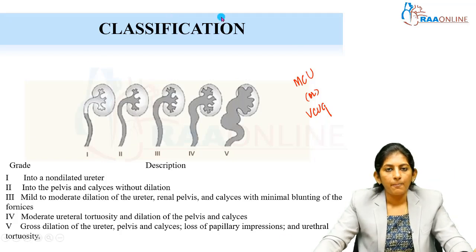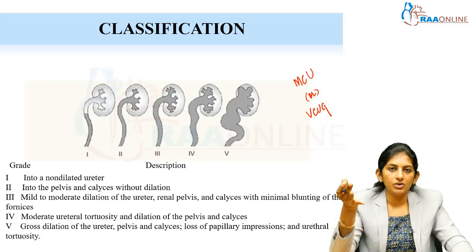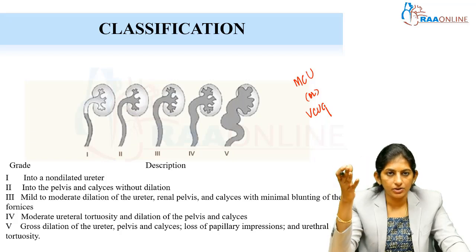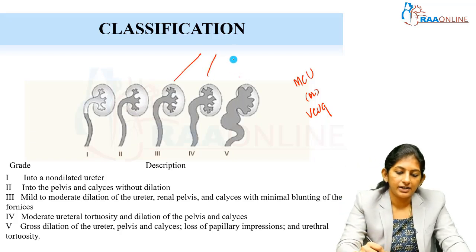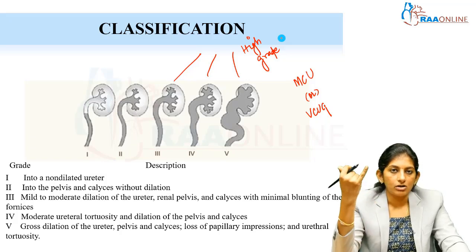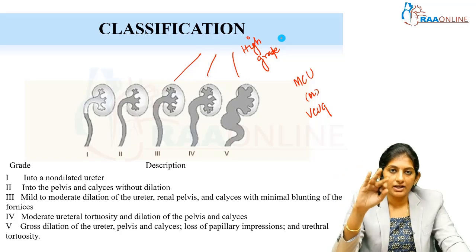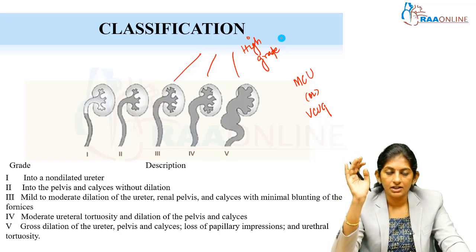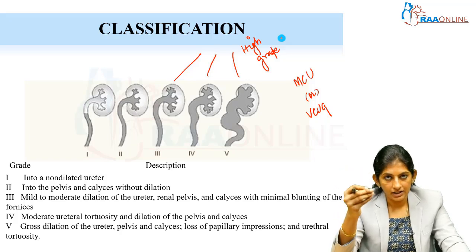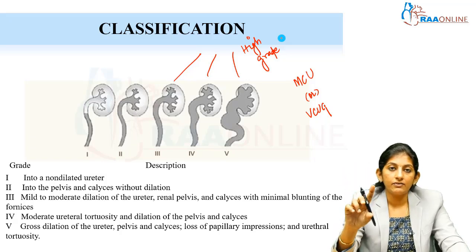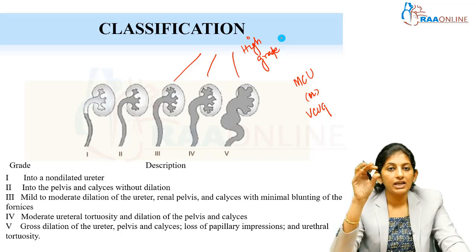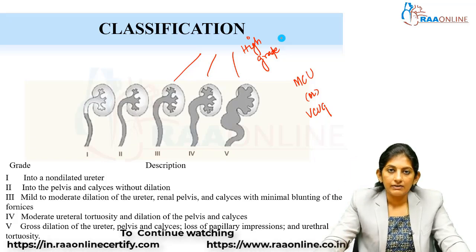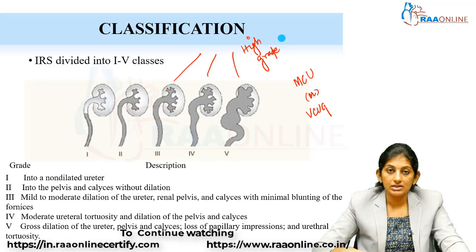This is the classification of VUR grading. Grade 1 and Grade 2 are called low-grade VUR; Grade 3, 4, and 5 are high-grade VUR. High-grade VUR is less likely to resolve, more likely to cause recurrent UTI, and more likely to cause reflux-related nephropathy. That is why we perform MCU — to identify the grade. If it is high-grade VUR, prophylactic antibiotics must be started. The MCU provides critical information to guide intervention and protect the patient.